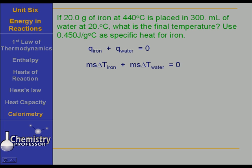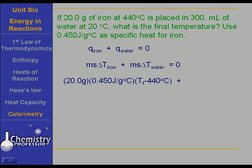The MSΔT for iron is the heat that iron is losing — that's negative. The MSΔT for water is the heat that water is gaining — that's positive. That's why it adds out to zero. We take our 20 grams of iron with a specific heat of 0.450 joules per gram degrees Celsius, and multiply it by the change in temperature, expressed as the final temperature minus the initial temperature: T_f minus 440.